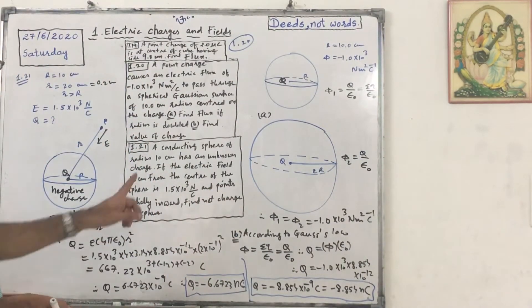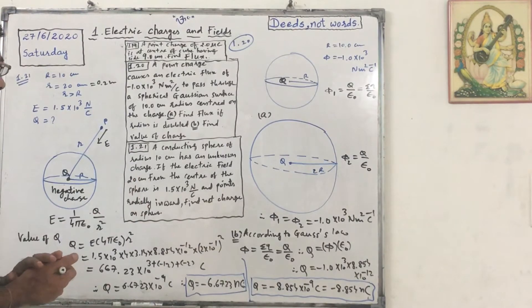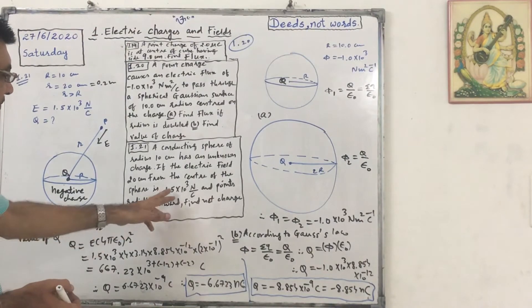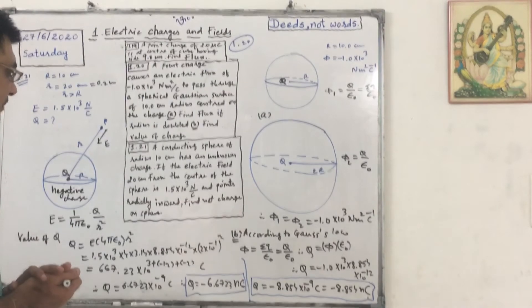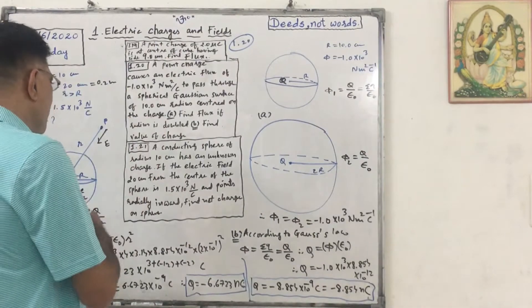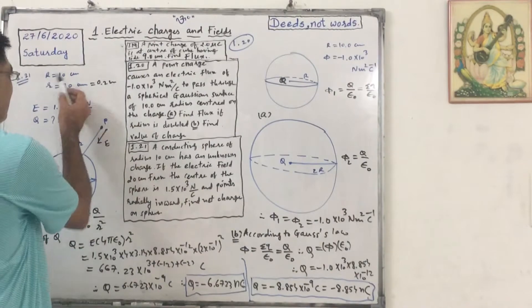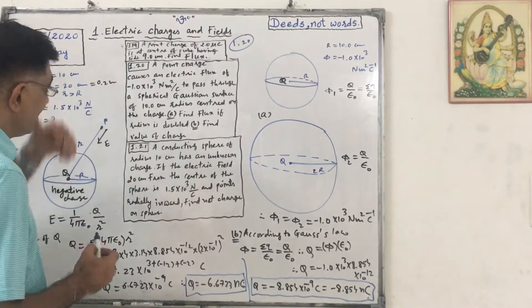A conducting sphere of radius 10 centimeter has an unknown charge. If the electric field 20 centimeter from the center of the sphere is 1.5 into 10 raised to 3 Newton per Coulomb and points radially inward, find the net charge on the sphere. Here radius is 10 centimeter but the point is at 20 centimeter, so it is outside. Small r is greater than capital R.